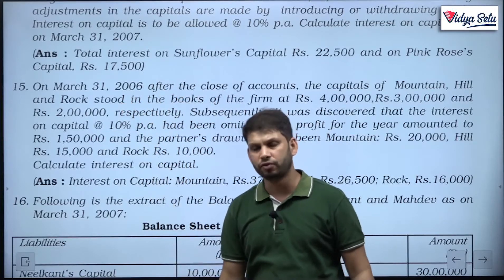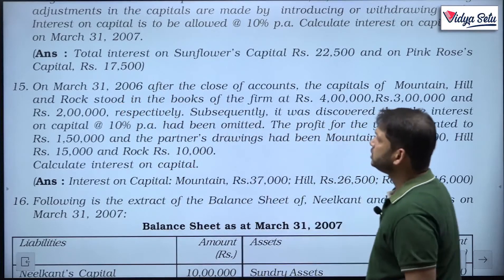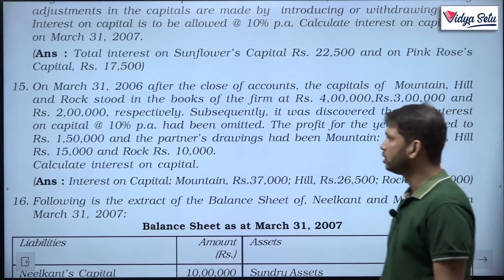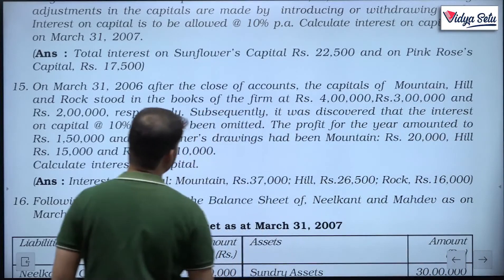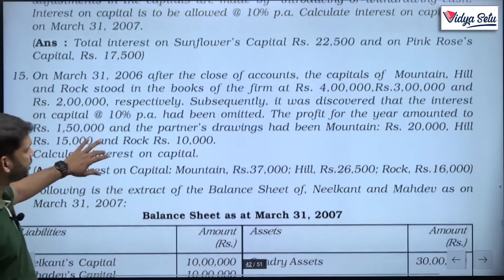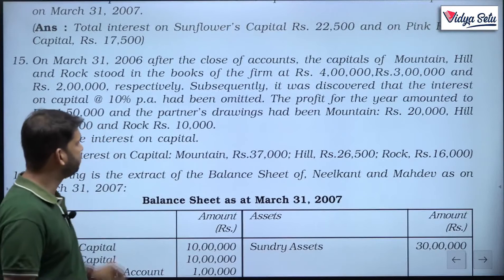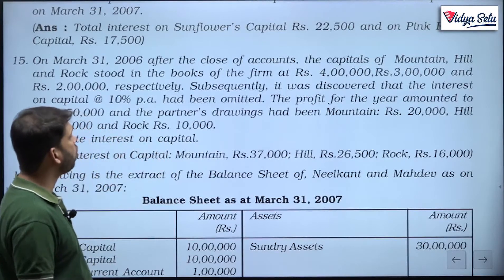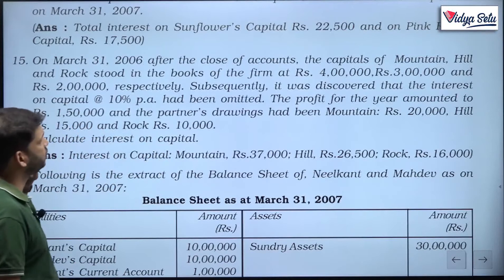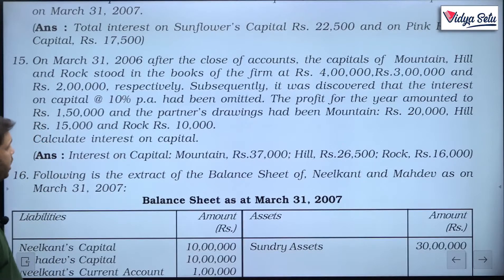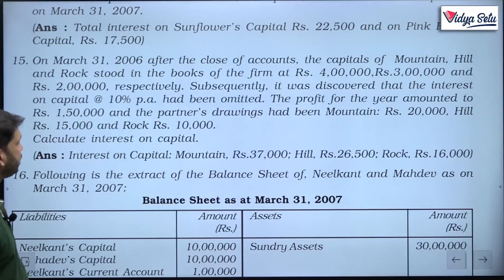It does not make any difference. On March 31st 2006 after the close of accounts, the capital of Mountain, Hill and Rock stood in the books of the firm at rupees 4 lakh, 3 lakh and 2 lakh respectively. Subsequently it was discovered that interest on capital at the rate of 10 percent per annum had been omitted. The profit for the year amounted to rupees 1 lakh 50,000 and the partners' drawings had been: Mountain 20,000, Hill 15,000 and Rock 10,000. Calculate interest on capital.